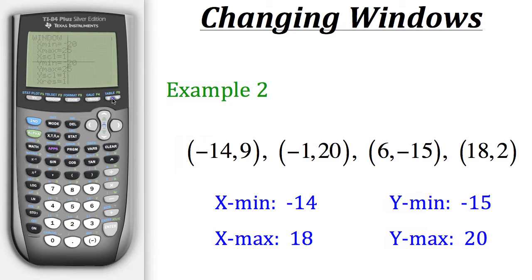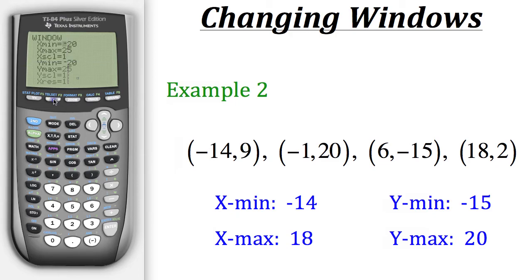Now we have a window where we can see the points clearly with a little extra space to work with — this is an ideal window for this plot. You may notice the axes look a bit cluttered. It's not essential, but we can fix that to make the graph look cleaner by going to window.